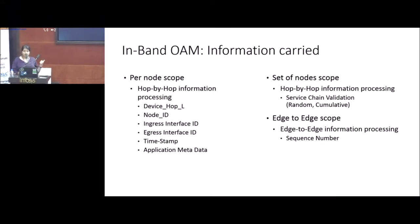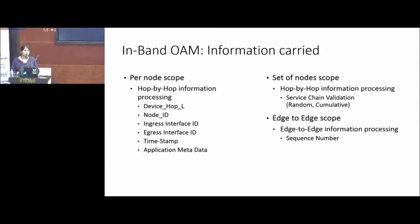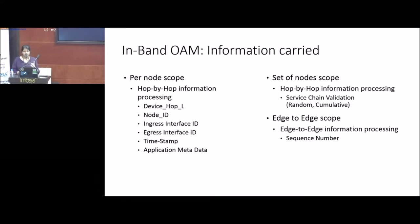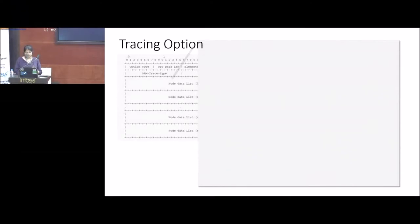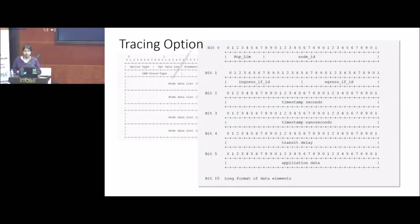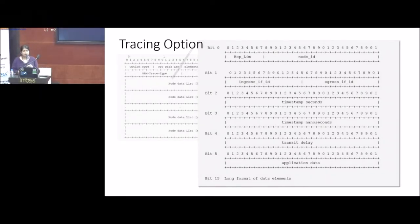There is also some work going on in the IoT area to use this edge-to-edge scope data for timestamping and in fact using it to have some kind of deadline-based routing, where you can look at that timestamp and decide to prioritize that packet data. That work is going on in the IETF 6TiSCH work group. Based on this data, in the IPPM group we have an active workgroup draft for IOM called the IOM data draft.